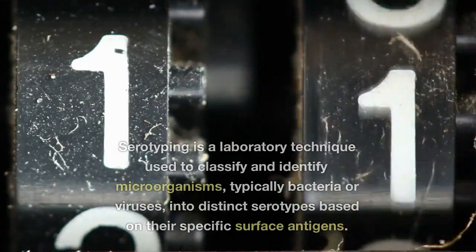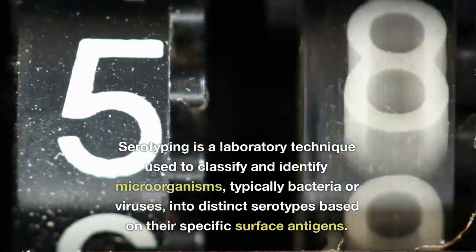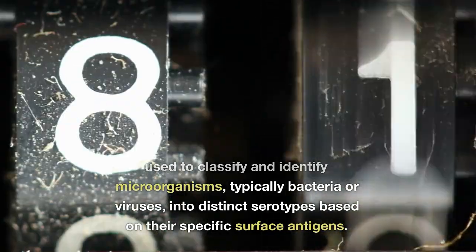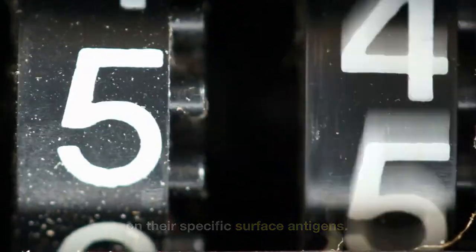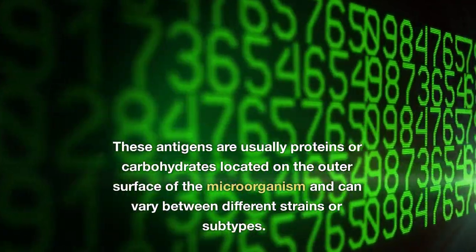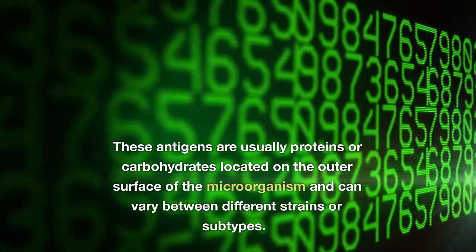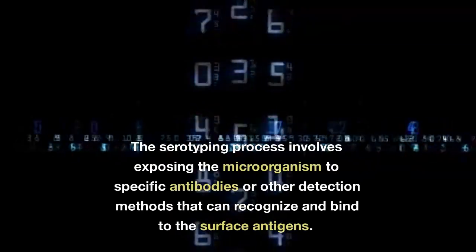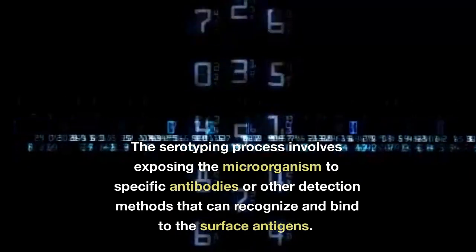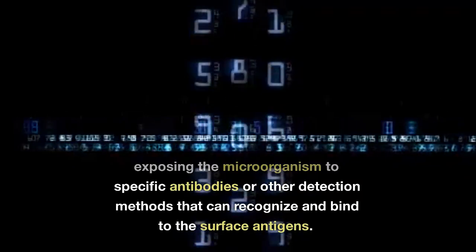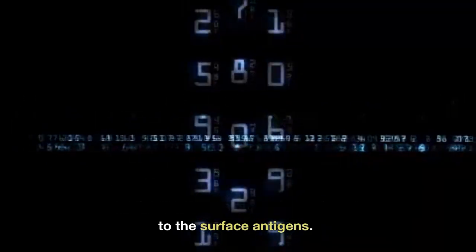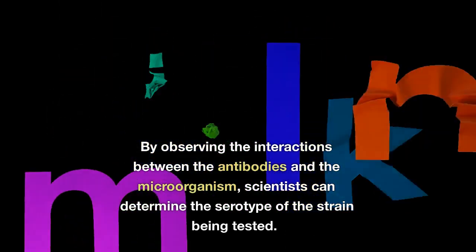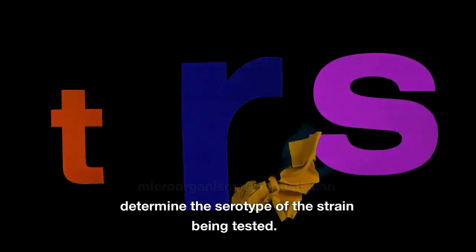What is serotyping? Serotyping is a laboratory technique used to classify and identify microorganisms, typically bacteria or viruses, into distinct serotypes based on their specific surface antigens. These antigens are usually proteins or carbohydrates located on the outer surface of the microorganism and can vary between different strains or subtypes. The serotyping process involves exposing the microorganism to specific antibodies or other detection methods that can recognize and bind to the surface antigens. By observing these interactions, scientists can determine the serotype of the strain being tested.